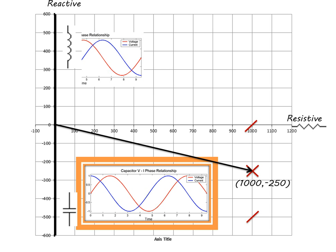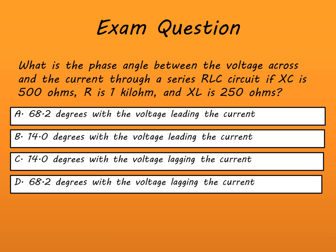Getting back to our example, we know the correct answer is going to be an angle smaller than 45 degrees with voltage lagging current. There's only one of the four choices that provides both of these conditions, answer C.